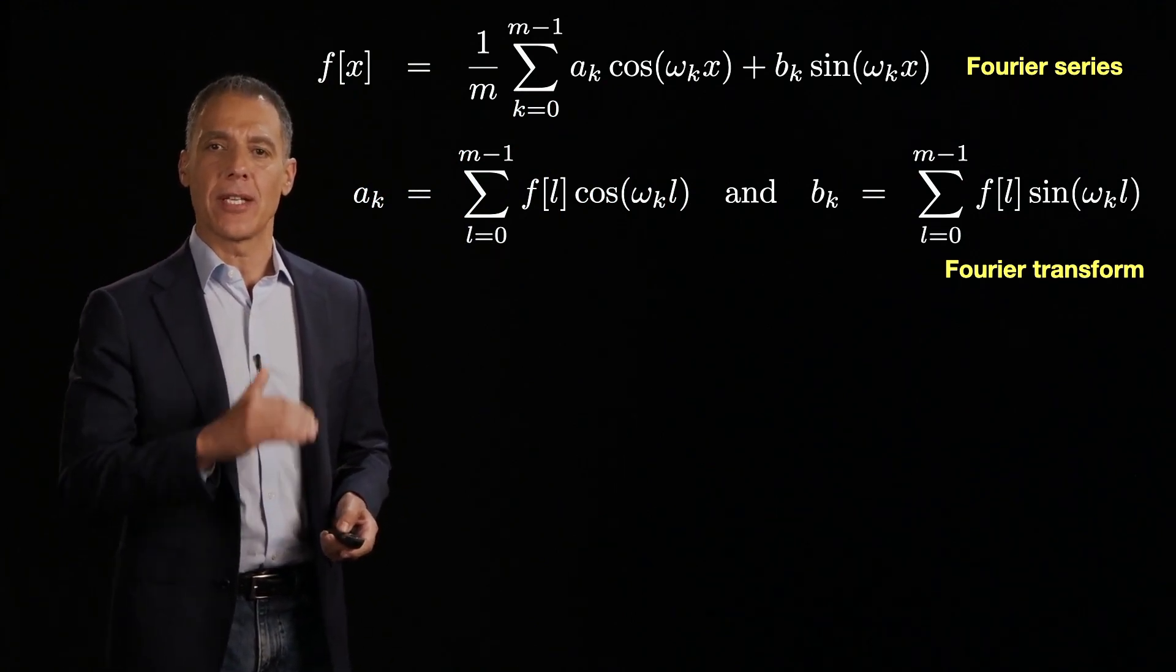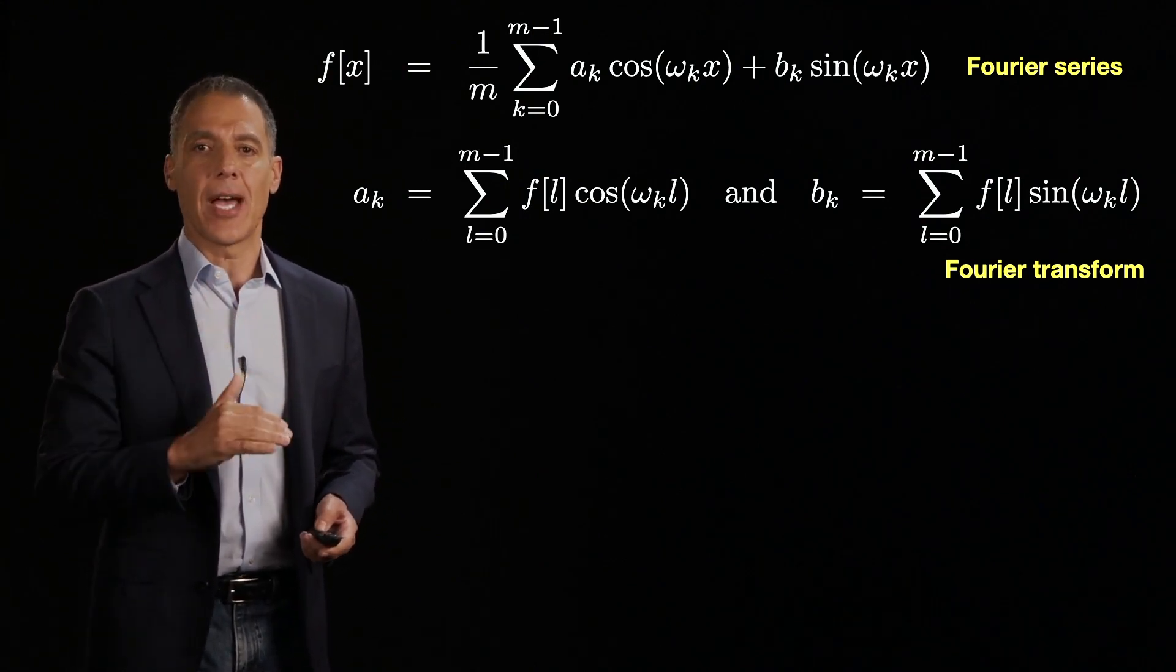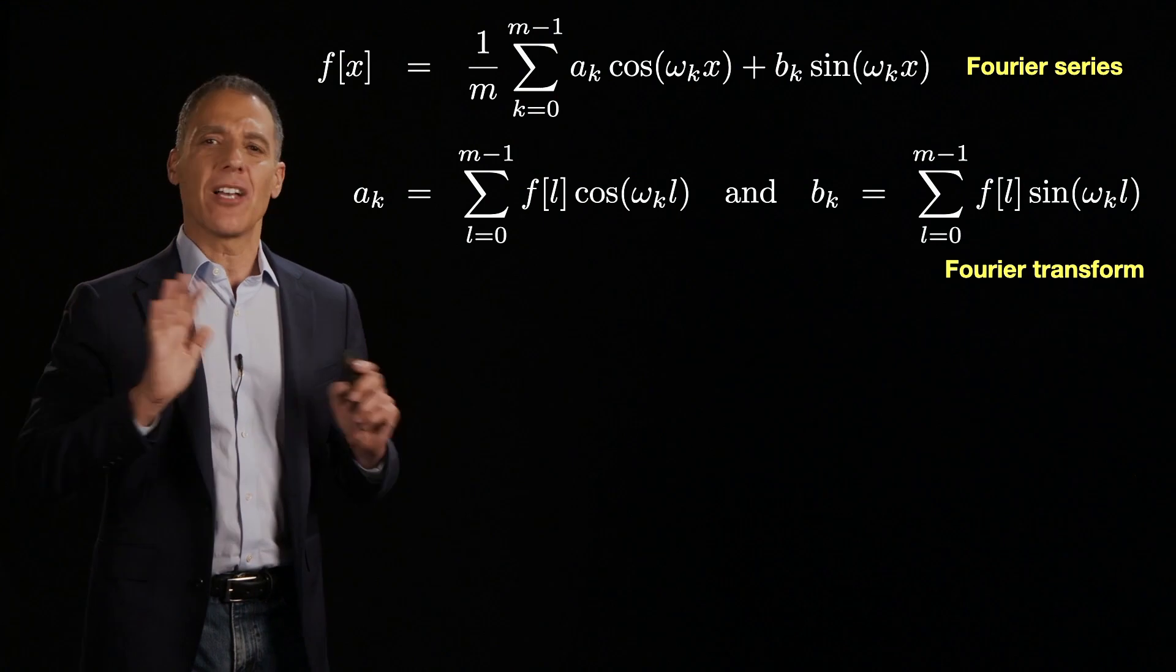All we are saying is that we are representing a signal, eventually an image, in terms of a cosine and a sine basis. That's it. Everything else is the notation.